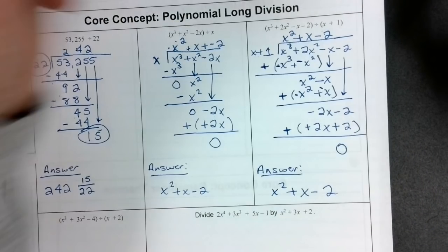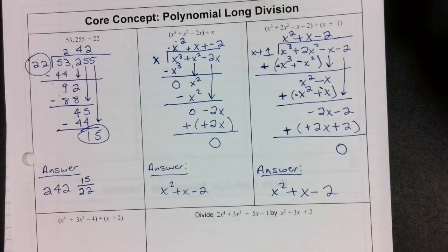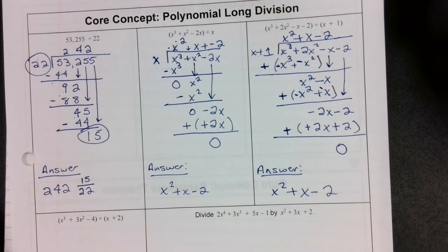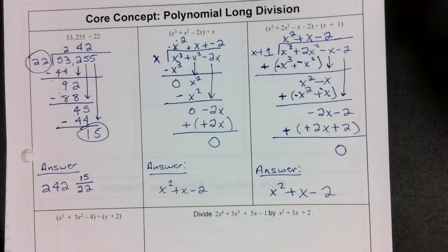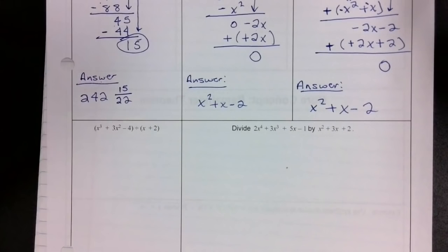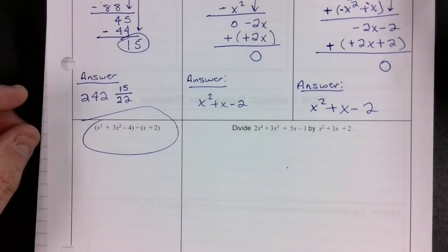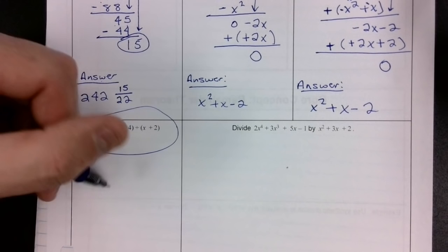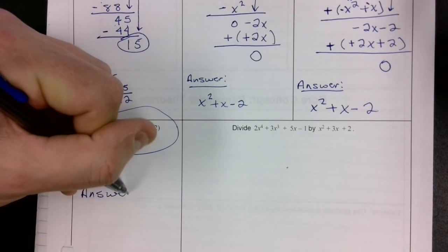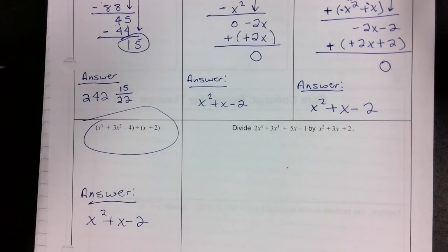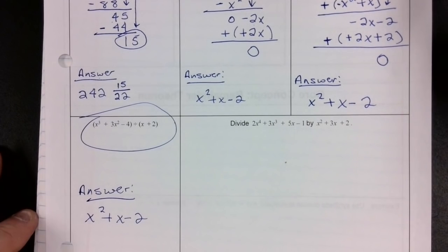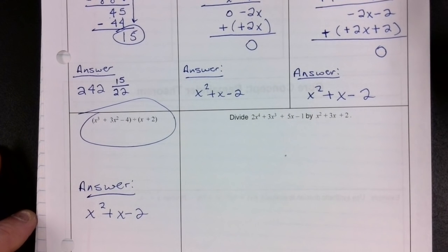The fact that these two answers are the same is just coincidence — these are examples from the book, and for some reason the book thought it'd be funny to give you the same answer every time. You won't get the same answer every time. I'm going to leave the third one for you to practice. You're going to get an answer of x squared plus x minus 2 again — someone wrote this book and thought it'd be funny.